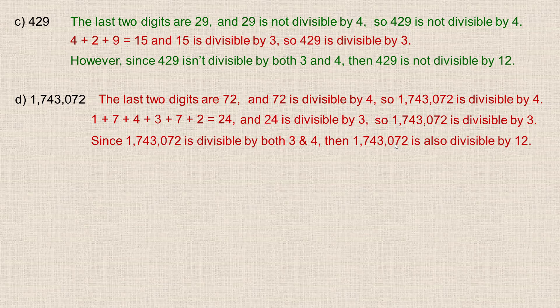To check for divisibility by 12, use the divisibility checks for 3 and 4. If the number is divisible by both, it's divisible by 12. And that's the end of the tutorial.